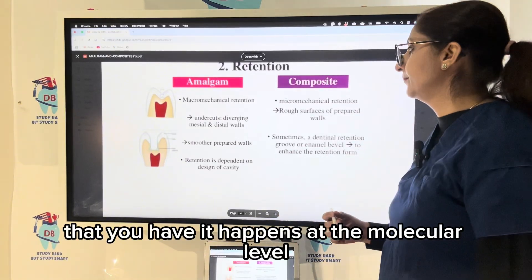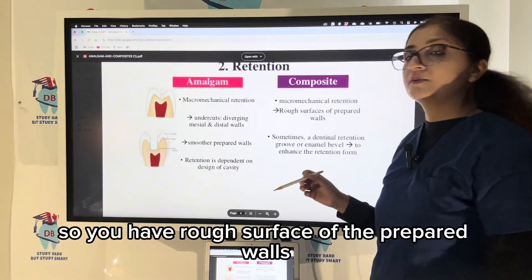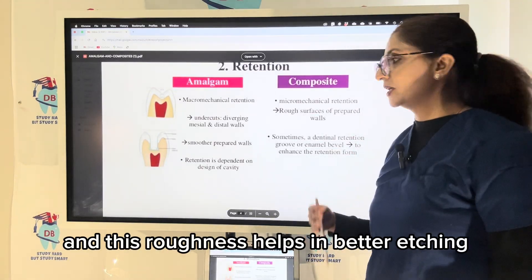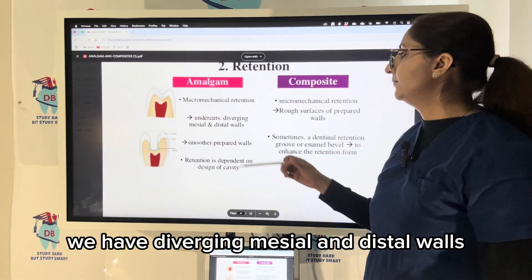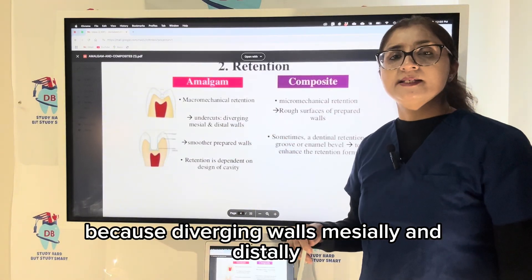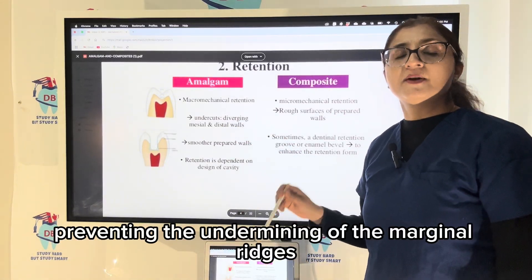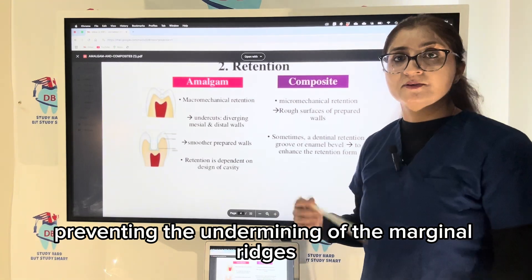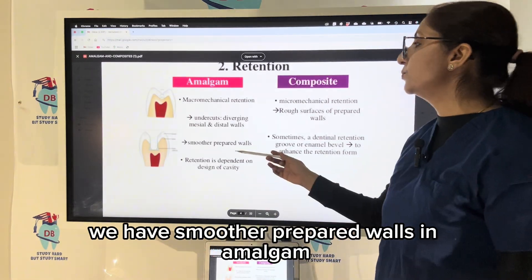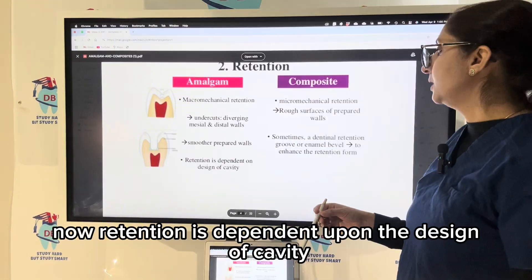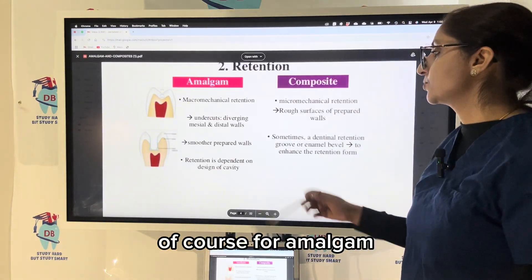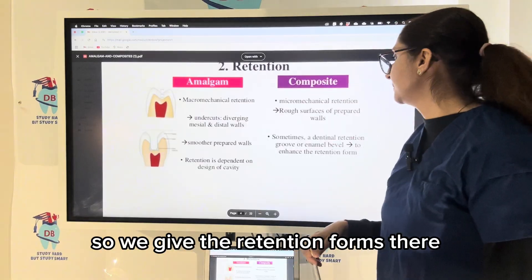Micro-mechanical bonding happens at the molecular level. Rough surfaces of the prepared walls help in better etching and better bonding. We have diverging mesial and distal walls because diverging walls mesially and distally help prevent undermining of the marginal ridges, which are a strong part of the tooth structure. In amalgam, the prepared walls are smoother, and retention is dependent upon the design of the cavity.